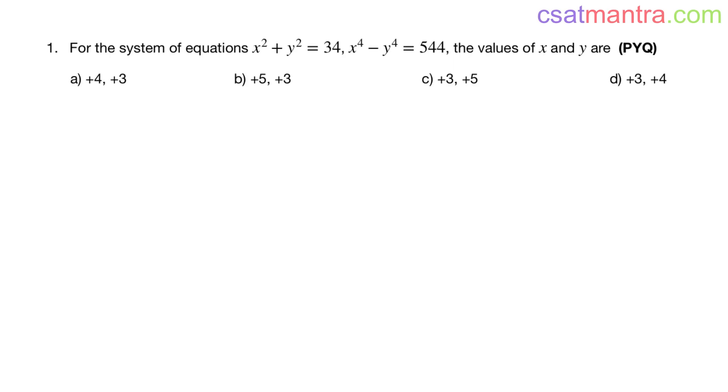If you observe here, 544 is positive, right? That means x⁴ is greater than y⁴. Then only you will get a positive value, right? That implies x is greater than y.